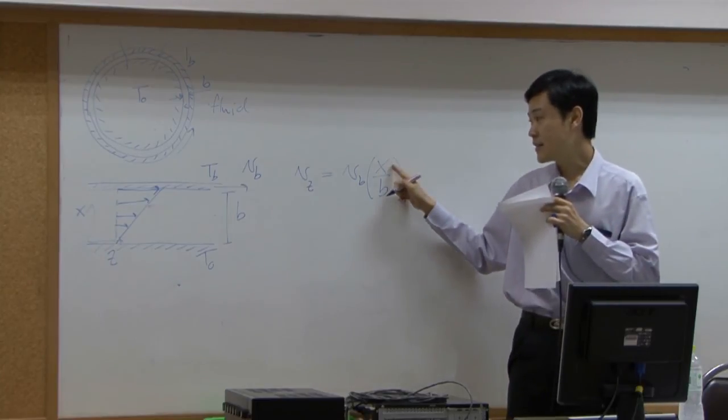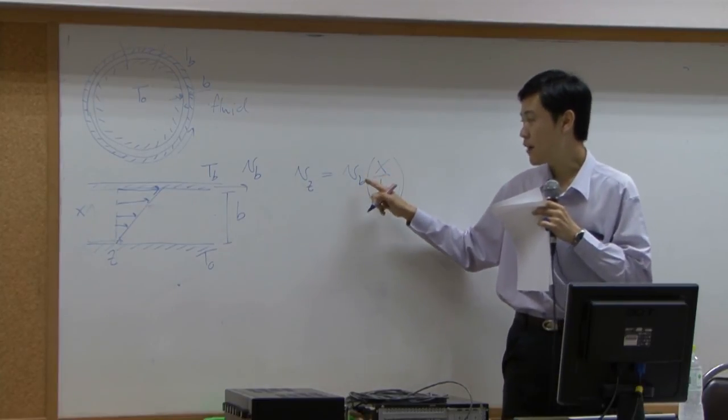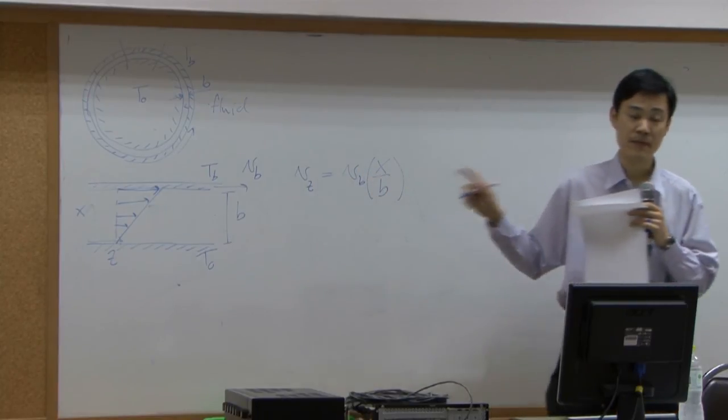At x equal to b, velocity is equal to vb. Okay? That's linear velocity profile.